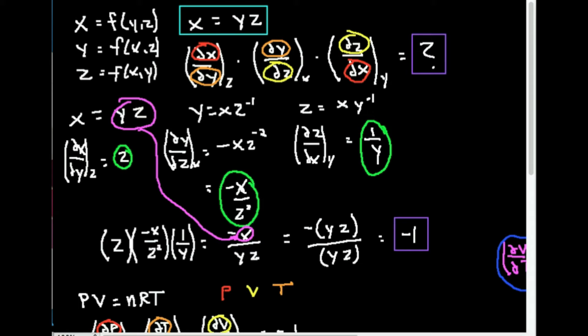Now one way to check this—and it's very important that you're able to write this correctly—notice I circled all the partial of x's in red, all the partials of y in orange, and all the partials of z in yellow. In theory, you have a partial of x over a partial of x—they should cancel. A partial of z over a partial of z—those should cancel. And a partial of y over a partial of y—those should cancel. And you might say, well, that should equal one. But I'm going to prove to you that this does not equal one. In fact, if you do this for any function of three interrelatable variables, it always equals negative one.